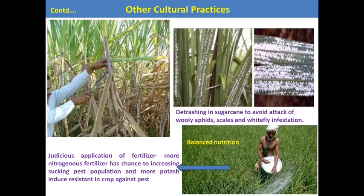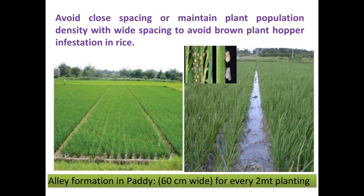Balanced nutrition: judicious application of fertilizers is important. Using excess nitrogenous fertilizer increases the chance of sucking pest population increase. Using more potassium fertilizer induces resistance in the crop against different pests. Therefore, balanced nutrition and judicious fertilizer application is essential. Alley formation or alley cropping: forming 60 cm wide alleys for every two meters of planting helps reduce brown planthopper infestation in rice.